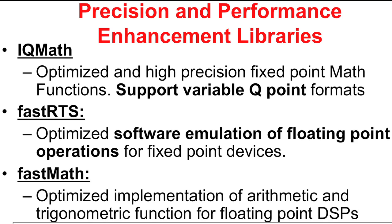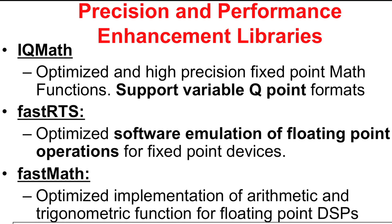The FastRTS library for fixed-point devices is a highly optimized software emulation of floating-point operations, allowing replacement of standard runtime support library routines with functionally equivalent FastRTS routines. The FastMath library for floating-point devices is an implementation of optimized arithmetic and trigonometric functions, comprising a collection of 26 optimized math functions. Both single and double-precision floating-point versions of these functions are available. Many of the mentioned libraries include Simulink models and C-equivalent implementations of the kernels.